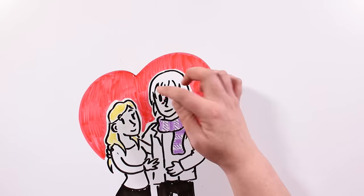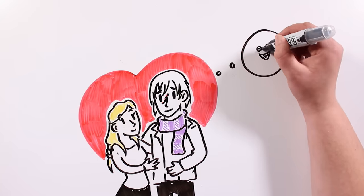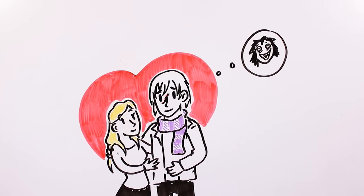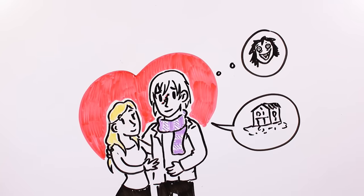But Lou wasn't over the incident with his brother yet. He felt going back to his old house would help him move on. He was afraid to go on his own though, so he asked Susan if she'd go with him. Of course Lou, I'd do anything for you.